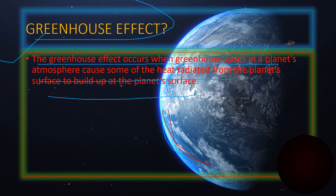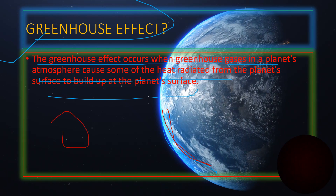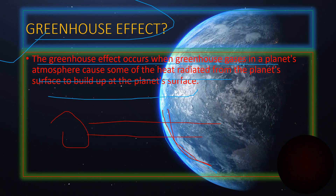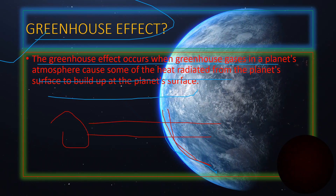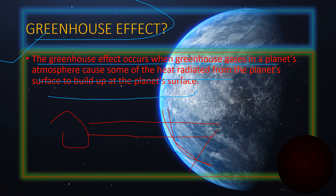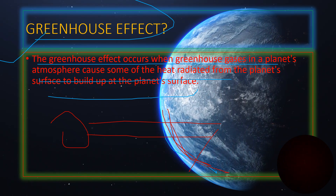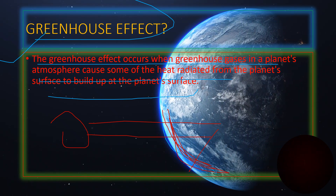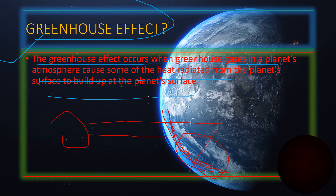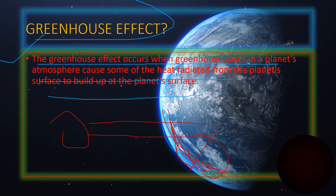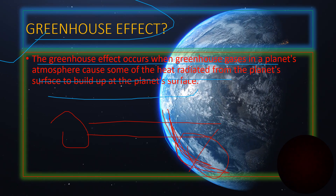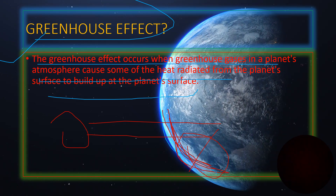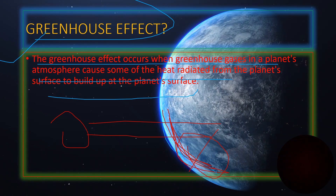If there is Earth and radiation which will bounce back, the greenhouse effect will catch it up in the atmosphere, which will help in rising Earth's temperature and help us from not freezing.